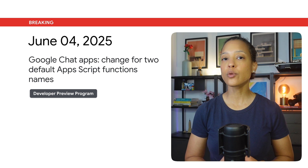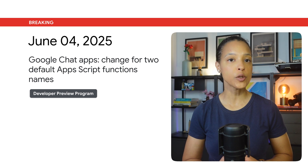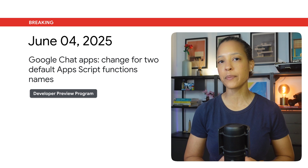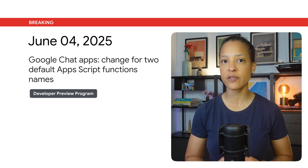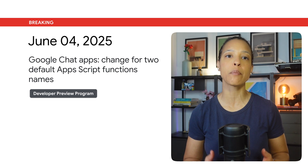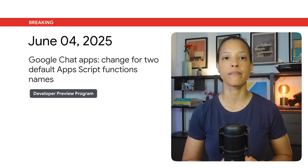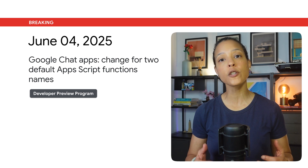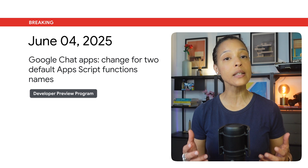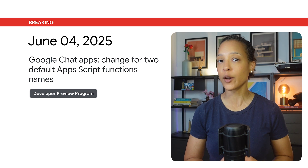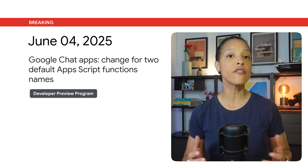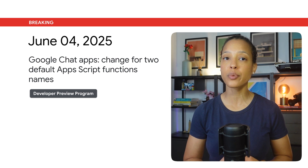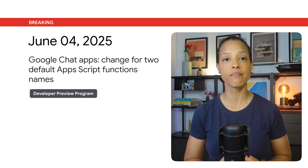Starting on June 16, 2025, there's been a change to two default Apps Script function names for Google Chat app triggers. This change is relevant for Google Workspace add-ons that extend Google Chat only, a feature which is currently available through the Developer Preview Program.